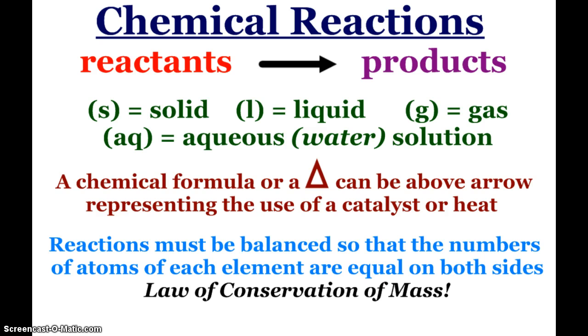First of all, remember that our chemical reactions are always written reactants on the left, products on the right of the arrow. Several times we might see some additional symbols in the equation, solid liquid gas, aqueous, meaning something's dissolved in water.